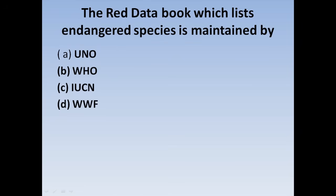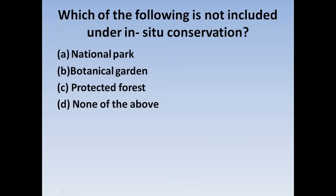Next question: The Red Data Book which lists endangered species is maintained by — Option A: UNO, Option B: WHO, Option C: IUCN, Option D: WWF. Correct answer: IUCN. The Red Data Book listing endangered species is maintained by IUCN.